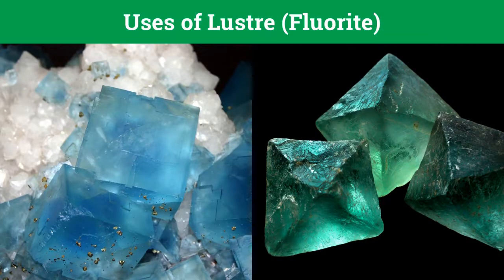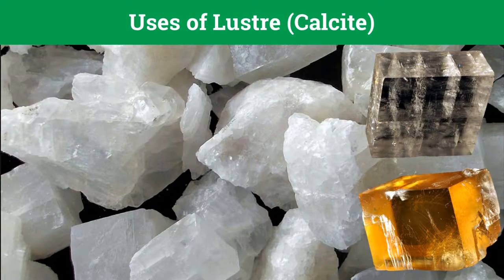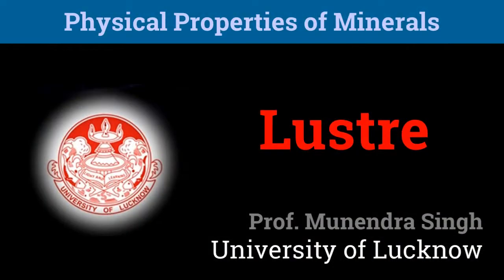Lustre is the most common property used for identification of minerals in the field. For example, these two blue and green crystals are the same fluorite minerals. Their colors are different, yet they both have the same vitreous lustre. Similarly, calcite can show up to 5 different colors — it can be transparent, white, yellow, green, or red. But we are also able to tell that they are the same crystal since they all have the same subvitreous lustre.